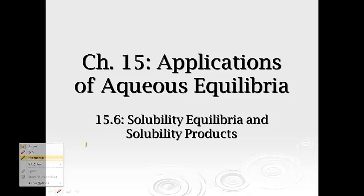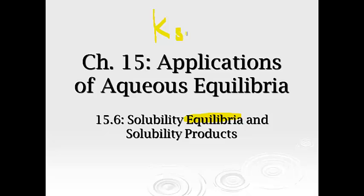We're going to talk about our last type of equilibrium, capital K value, and this is going to be solubility equilibrium. It's going to be Ksp. So we've got Ka, Kb, Kw, now we've got Ksp, and that's what we're going to talk about.